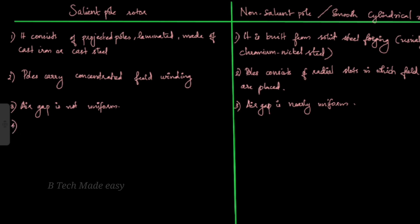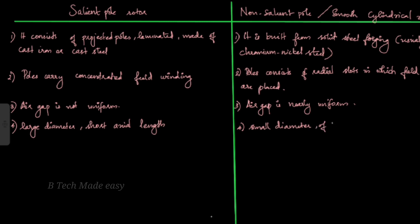Fourth point: the salient pole type has a large diameter and a short axial length. If the rotor has a large diameter with short axial length, it is a salient pole type. The non-salient pole type has a smaller diameter and a long axial length.